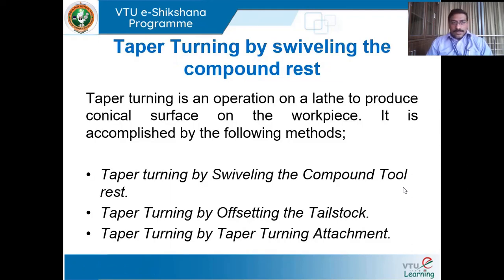The next operation is taper turning. The fundamental objective of a lathe is to produce circular parts, but it also produces tapered components. Taper turning is one such operation by the virtue of which we can produce tapered components — where at one end the diameter is bigger and at the other end the diameter is smaller over a given length. So taper turning is an operation on a lathe to produce conical surfaces on the workpiece. Taper turning can be accomplished by three methods: swiveling the compound tool rest, offsetting the tailstock, and using a taper turning attachment.